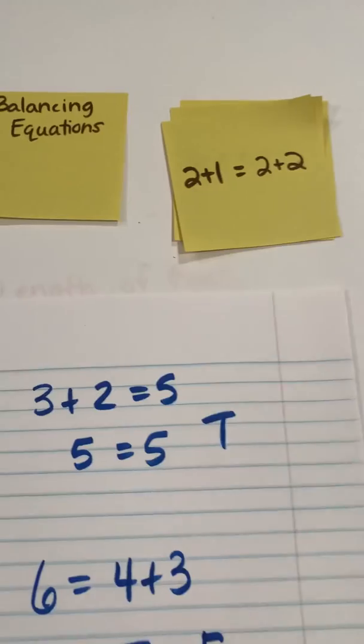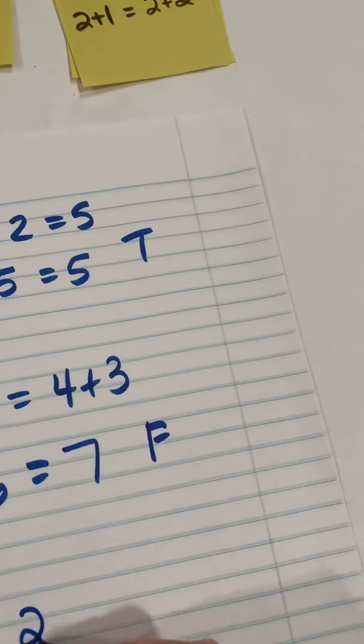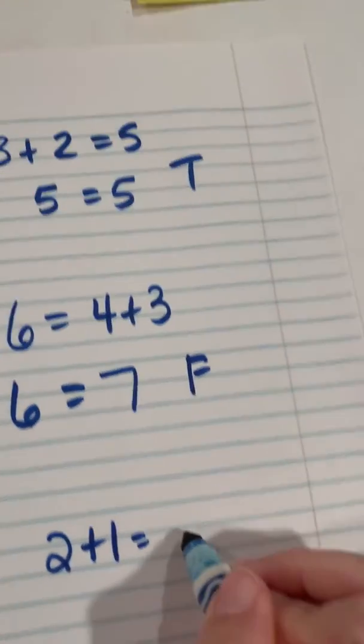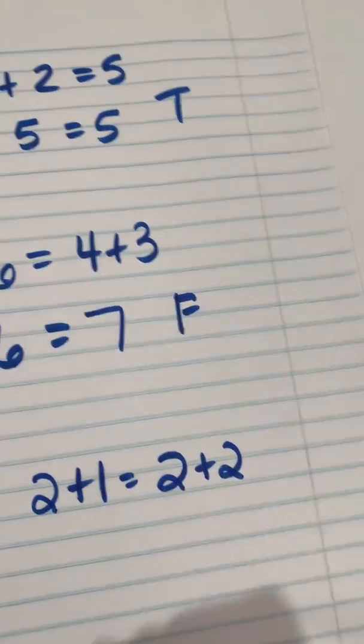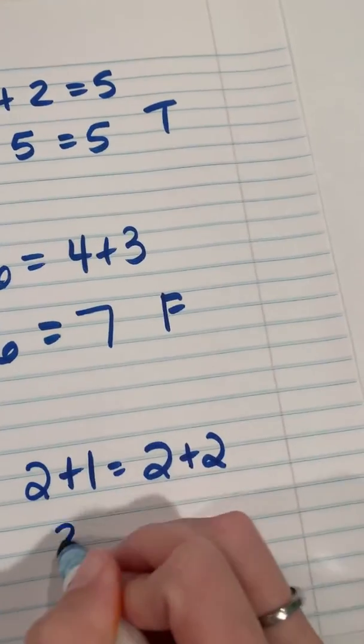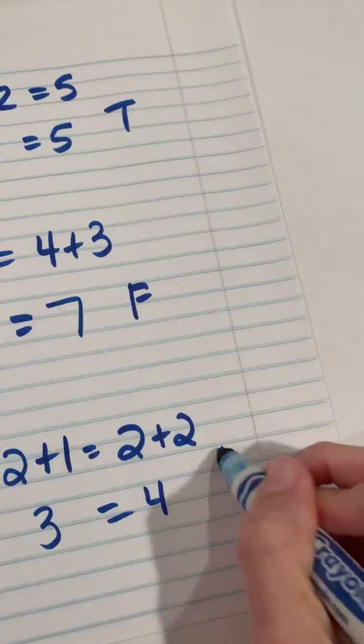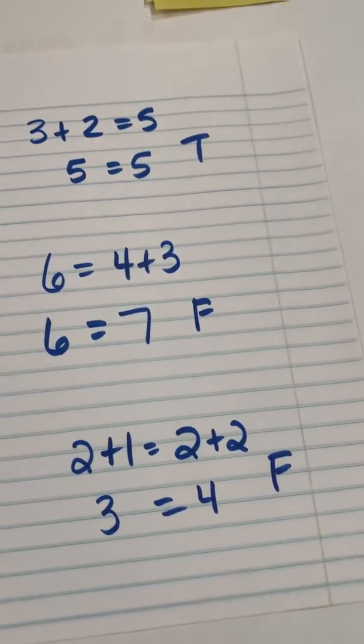And then what if I have 2 plus 1 is the same as or equal to 2 plus 2. Is that true? So let's see. 2 plus 1, I know that 2 plus 1 is 3. And I know my doubles, 2 plus 2 is 4. And that is false. 3 is not the same as 4.